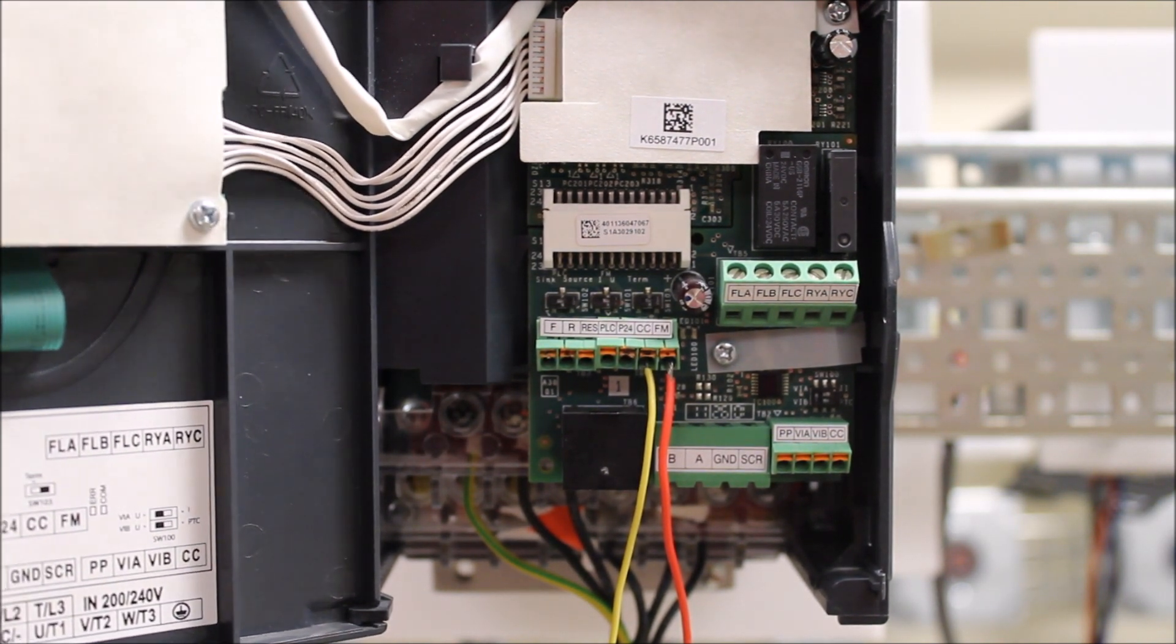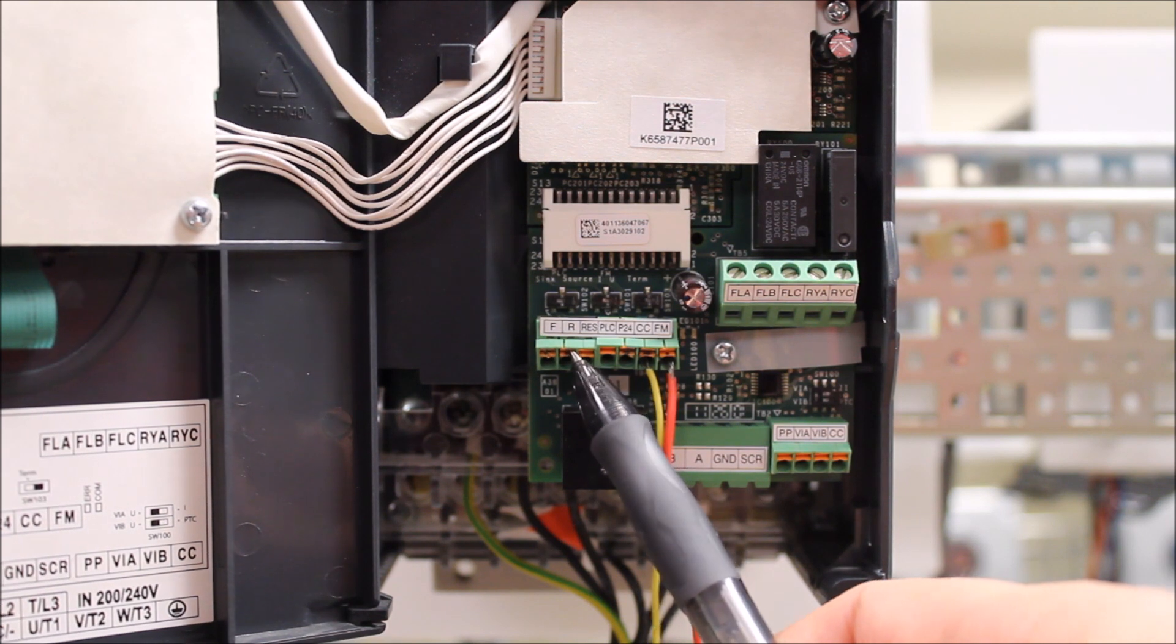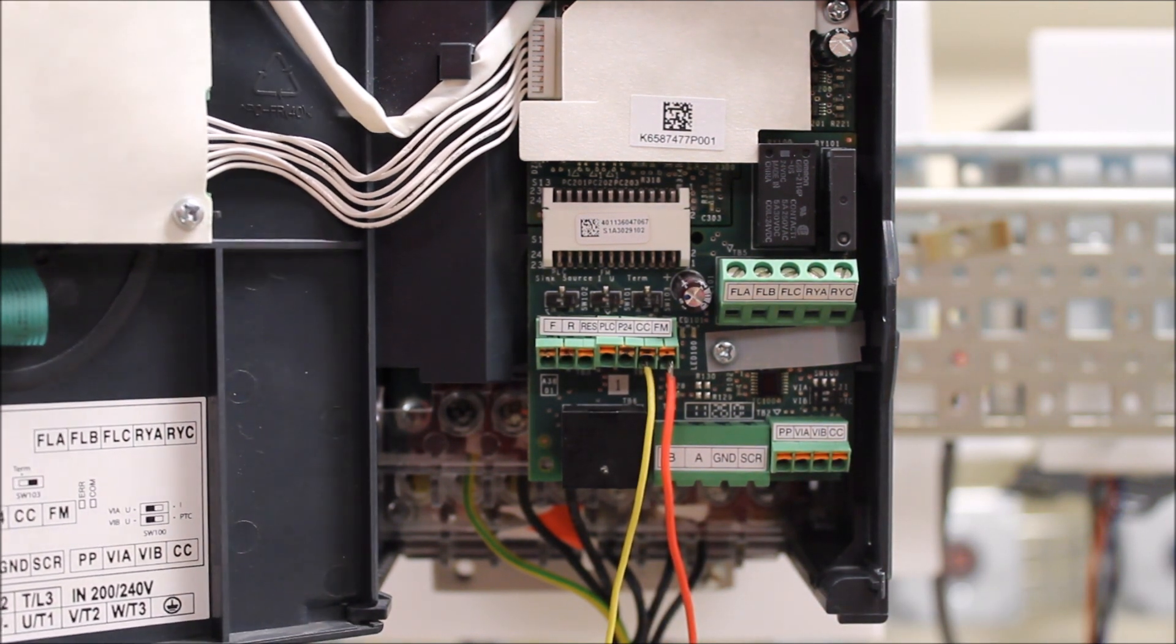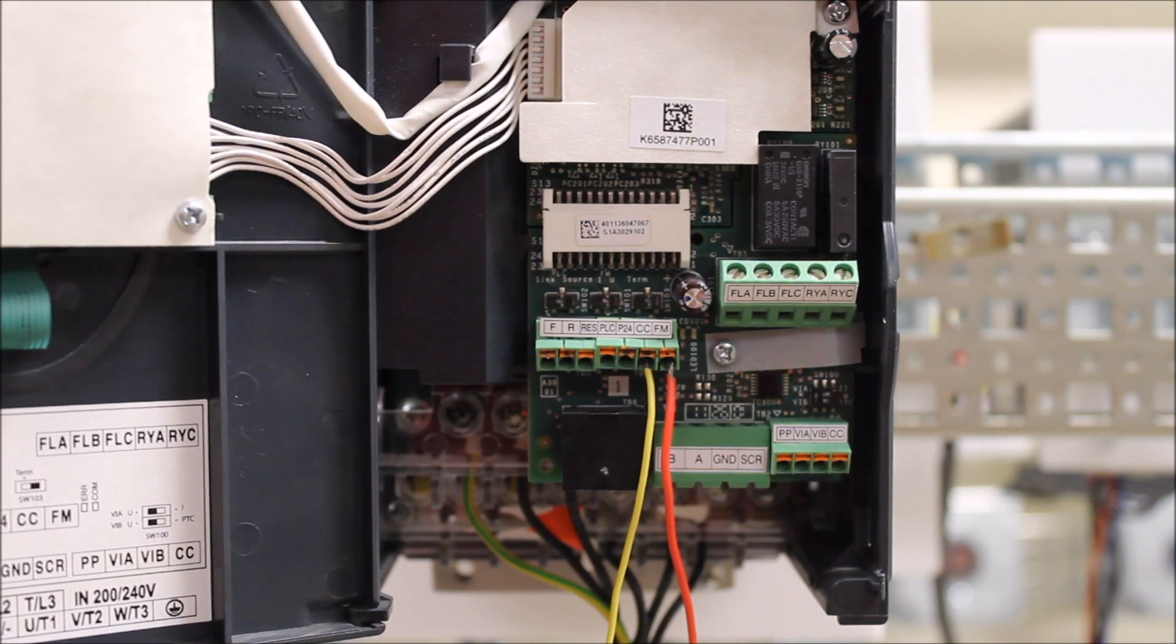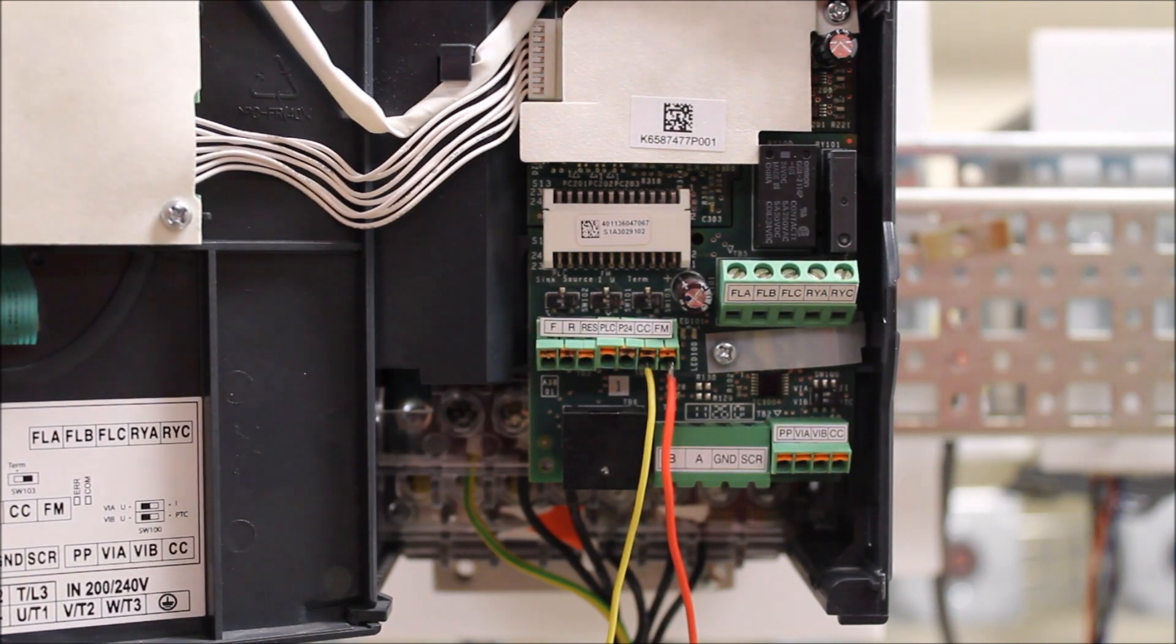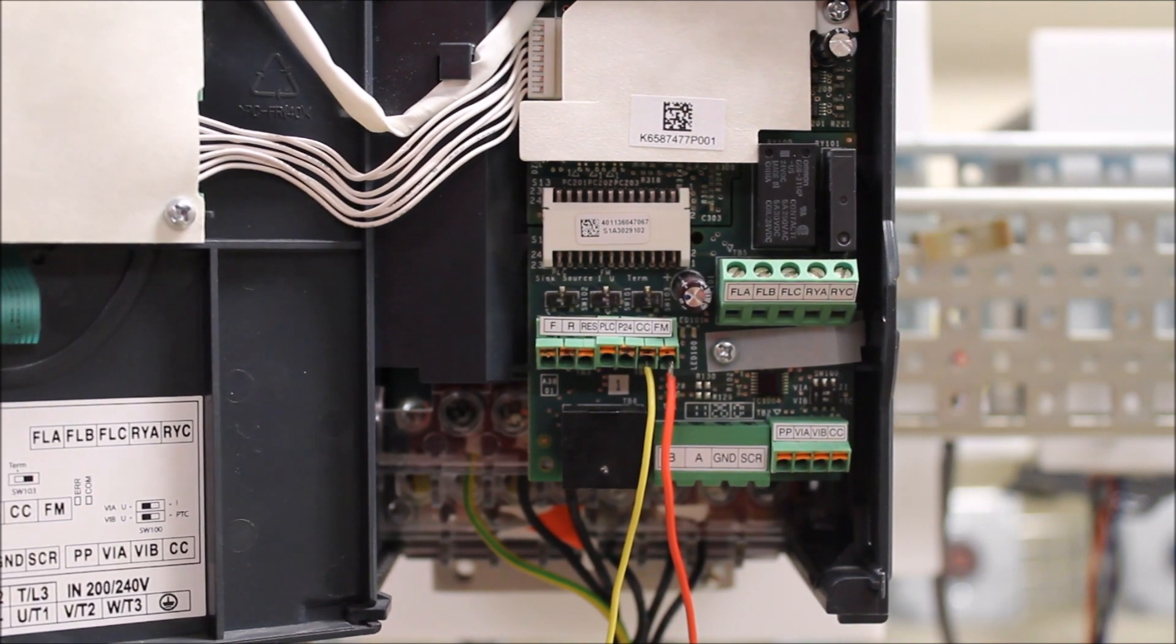And for our purposes here, we're going to go ahead and assign the terminal R as a permissive so that you have to enable both F and the R to run it. But in any case, if R opens up while you're running your motor still, it's going to go ahead and go to that free will stop permissive mode.